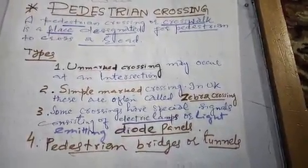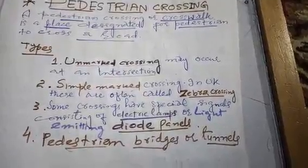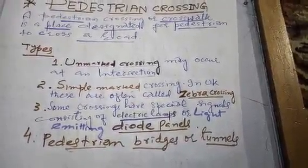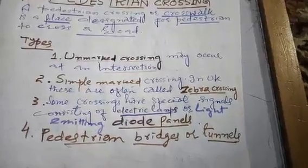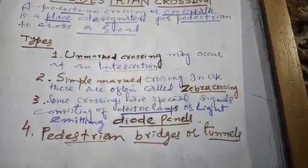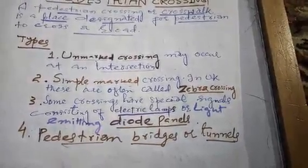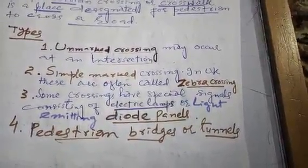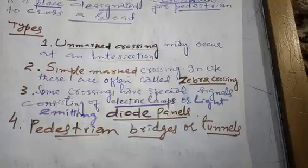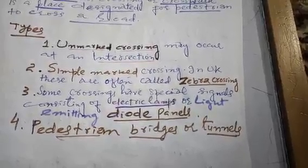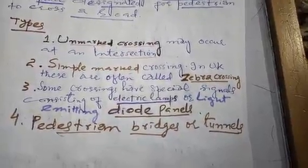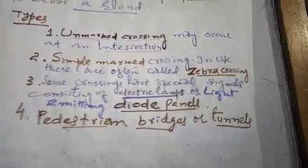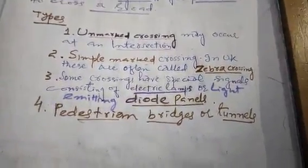So the four types of pedestrian crossings are: unmarked crossings at any intersection; simple marked crossings with white and black markings (called zebra crossings in the UK); signal-equipped crossings with electric lamps or diode panels; and pedestrian bridges or tunnels at very high-traffic locations.